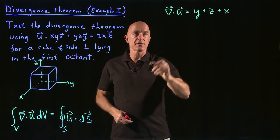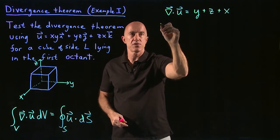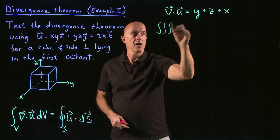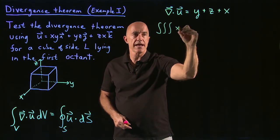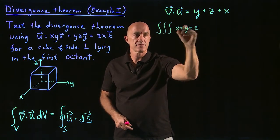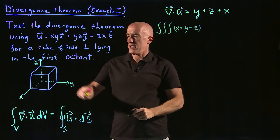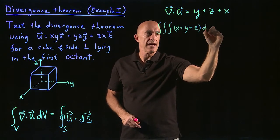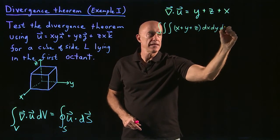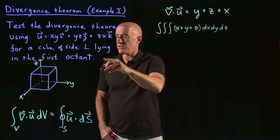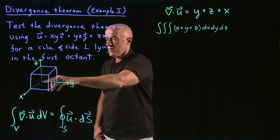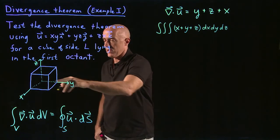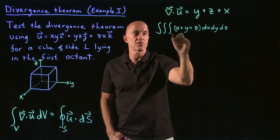Now we compute the volume integral, which is a triple integral of del dot u = x + y + z. We're integrating over a cube, so that's a straightforward integration: dx dy dz, where the sides are length l and the lower back corner is at the origin, so each integral goes from 0 to l.